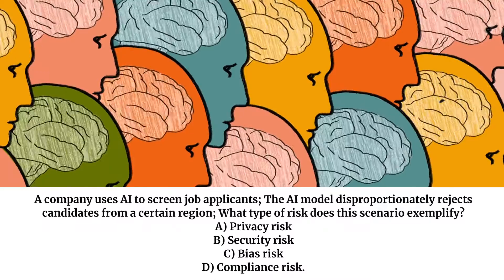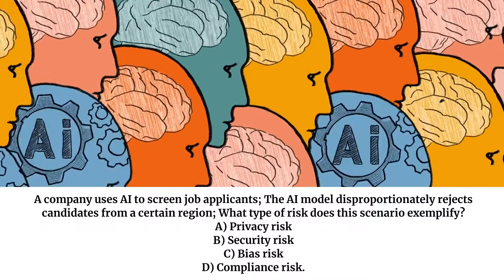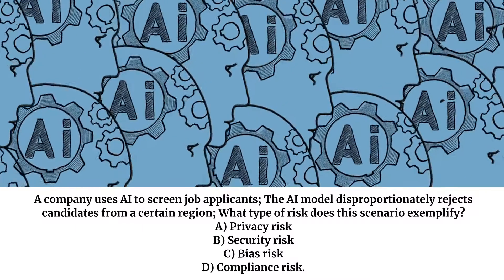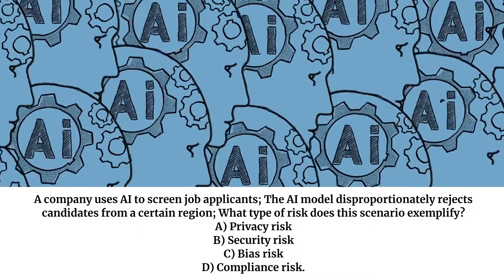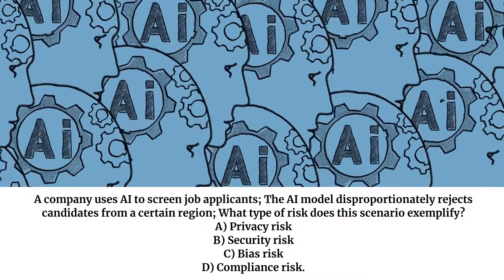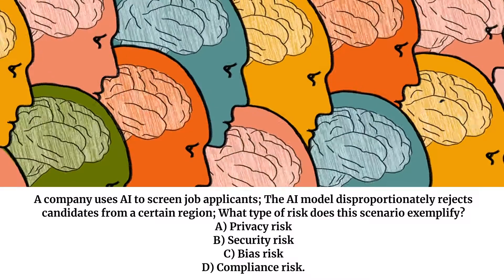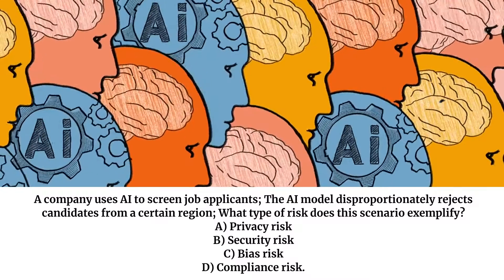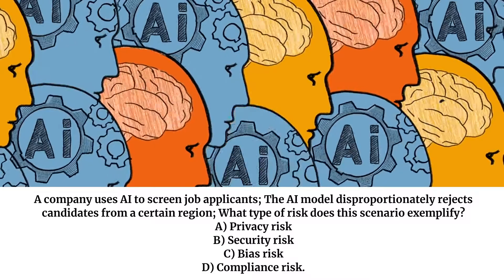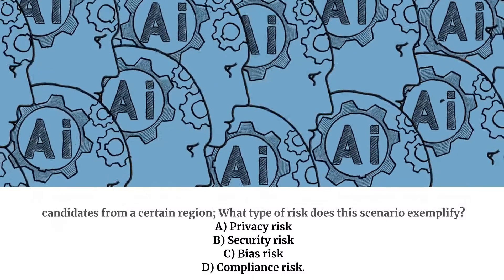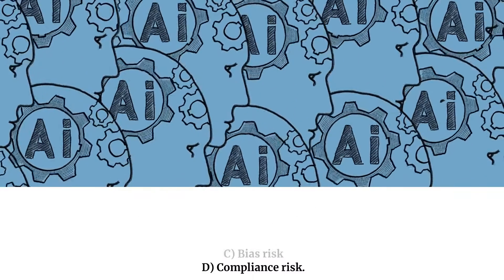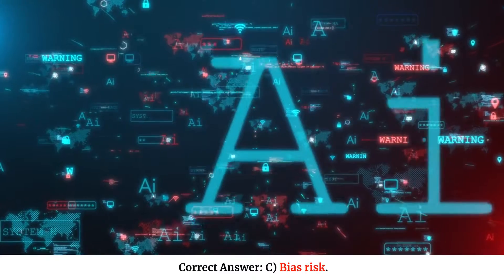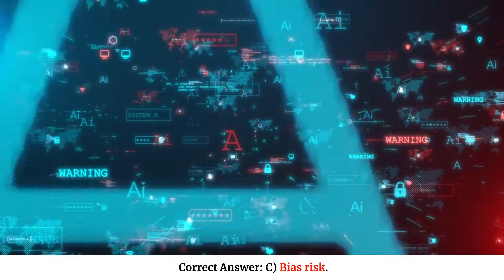A company uses AI to screen job applicants. The AI model disproportionately rejects candidates from a certain region. What type of risk does this scenario exemplify? A. Privacy risk. B. Security risk. C. Bias risk. D. Compliance risk. Correct answer: C. Bias risk.